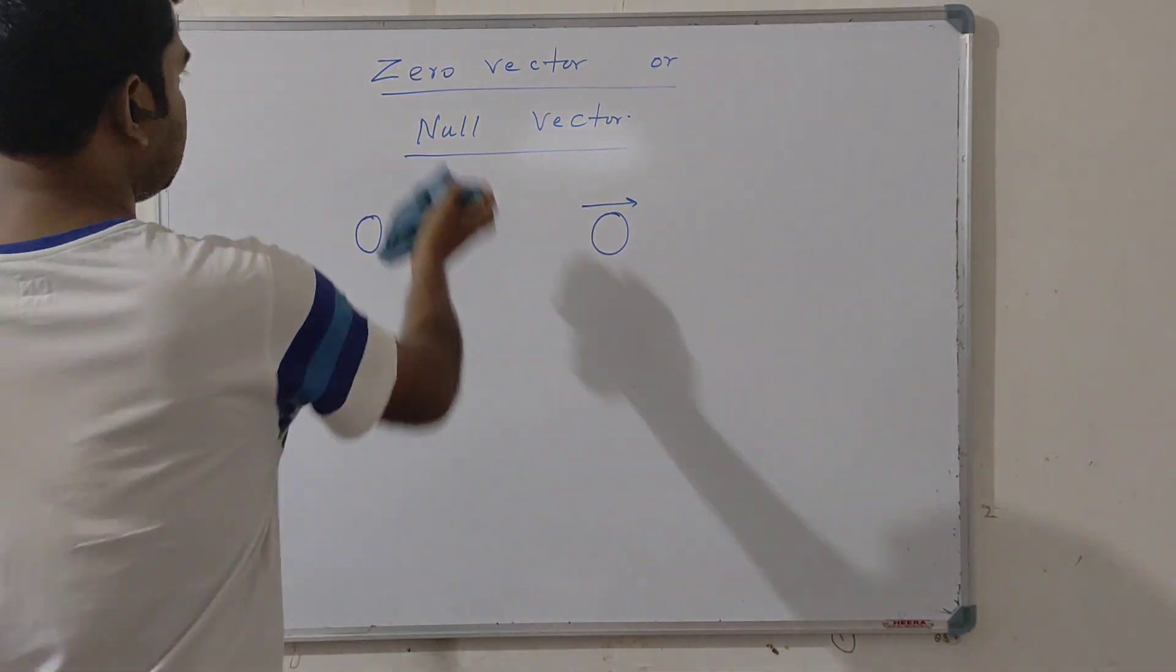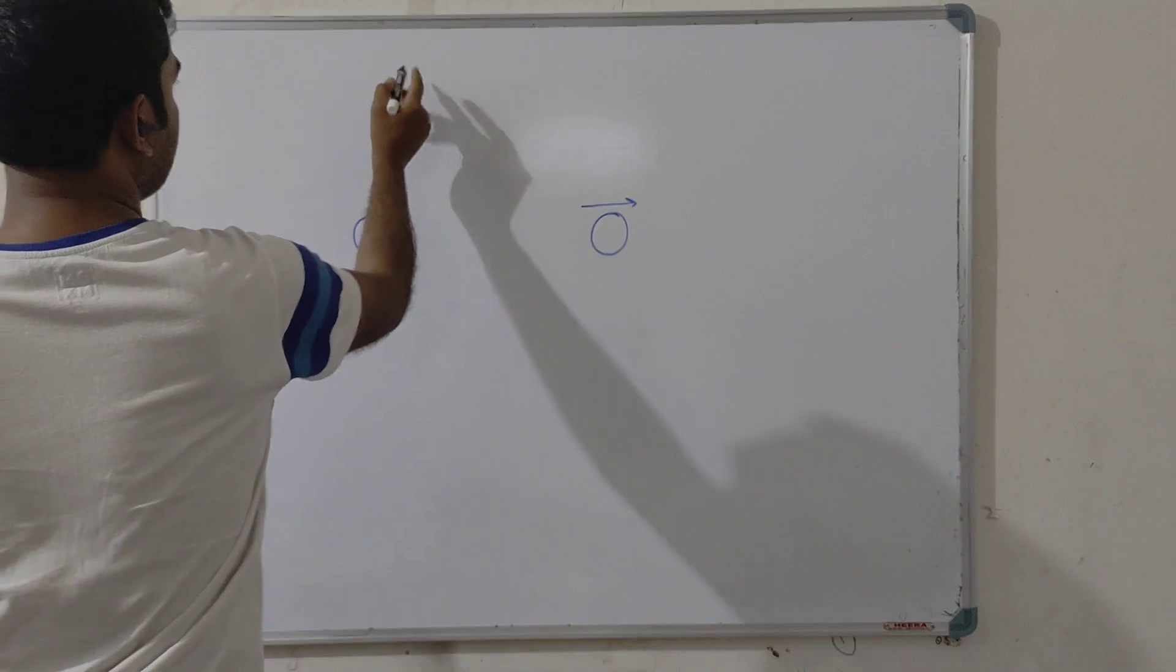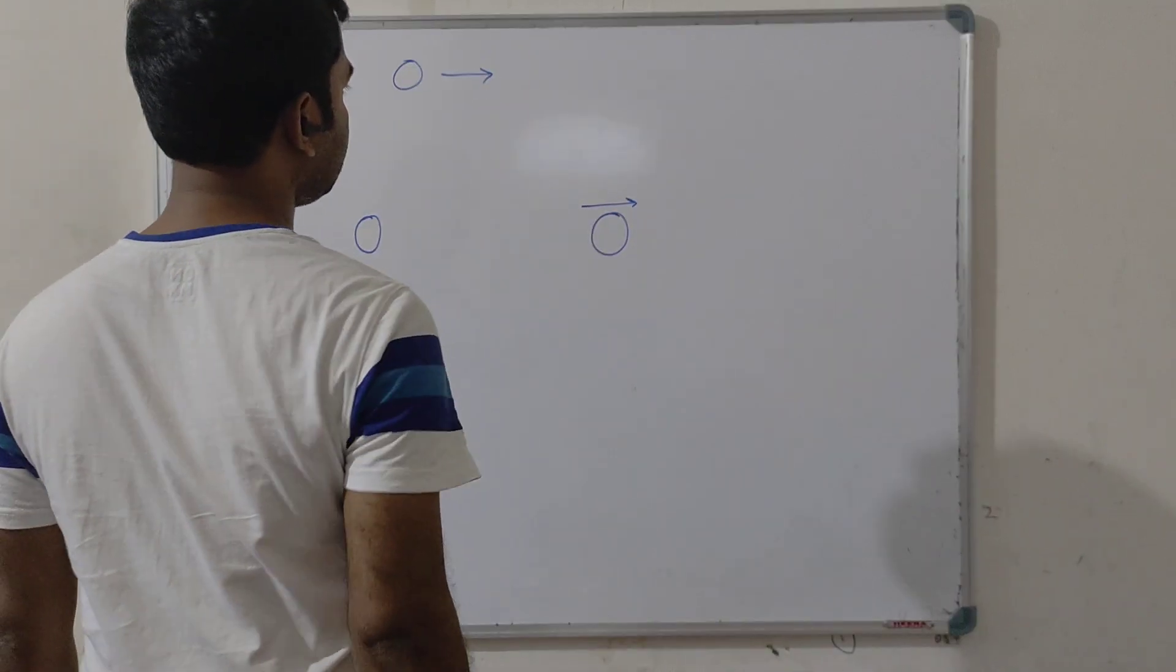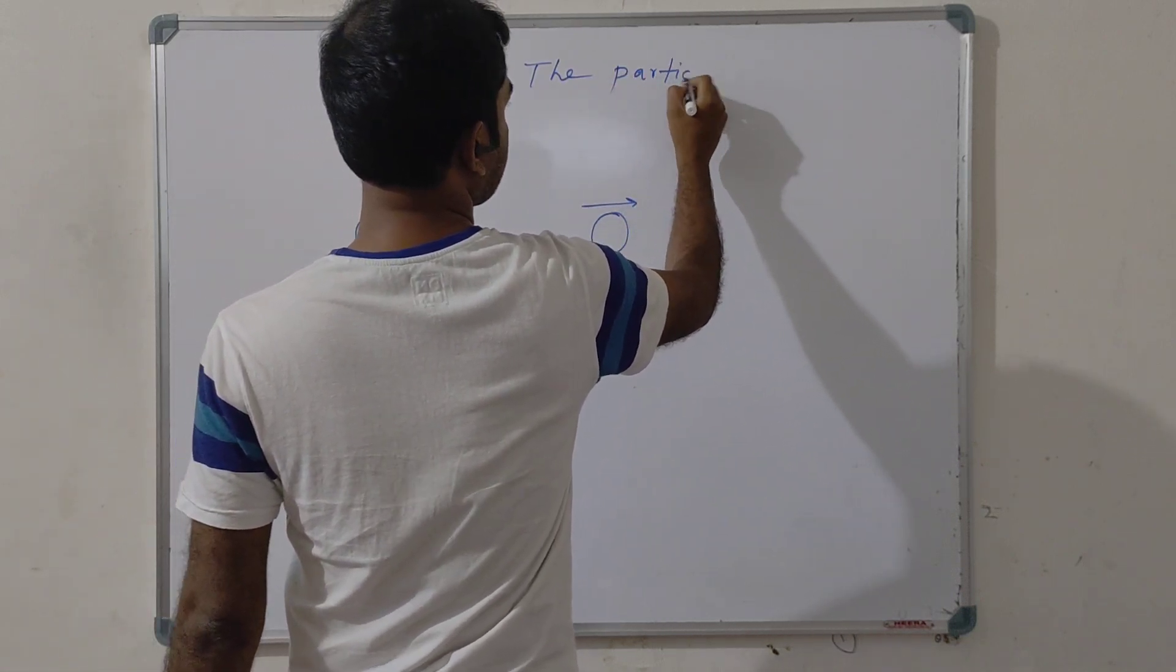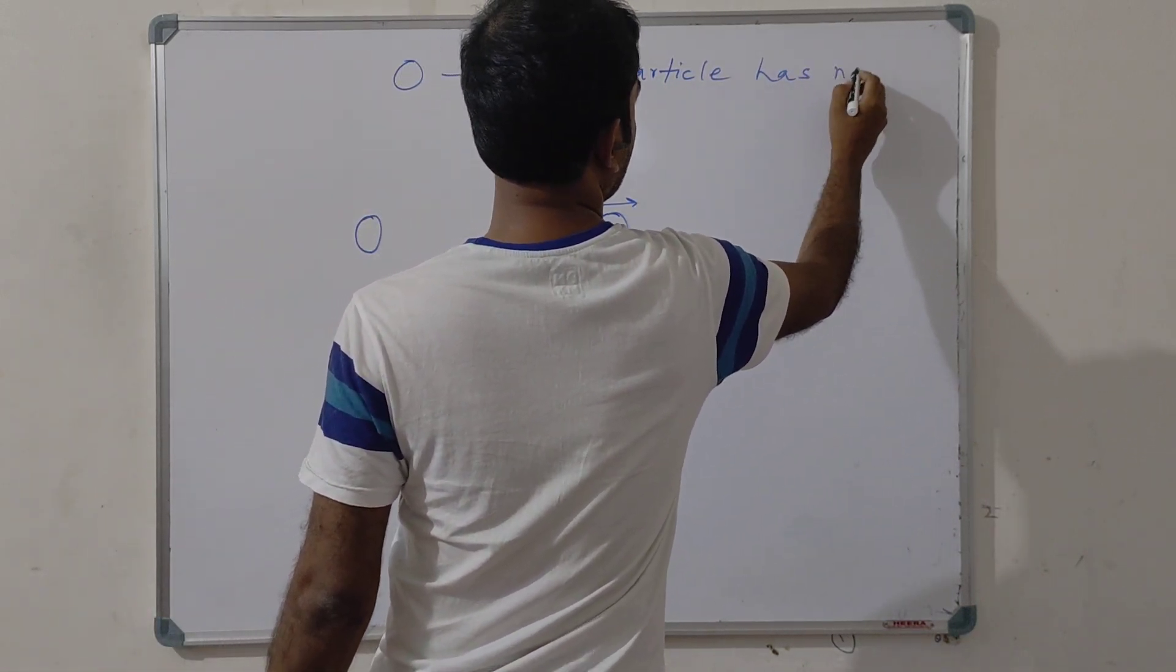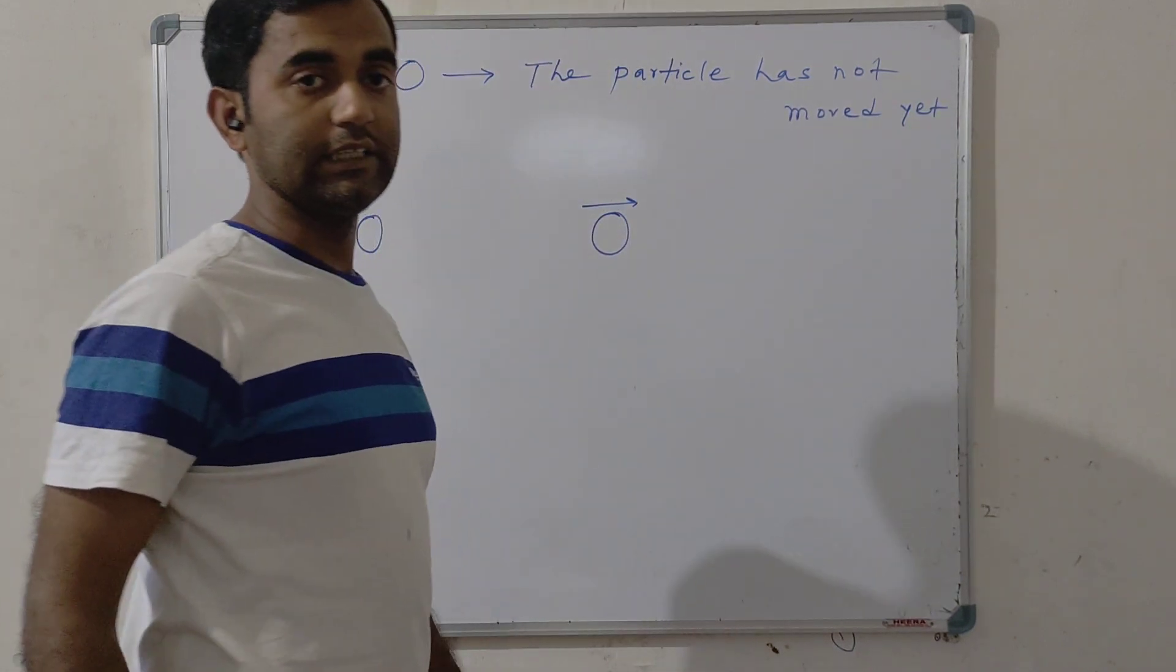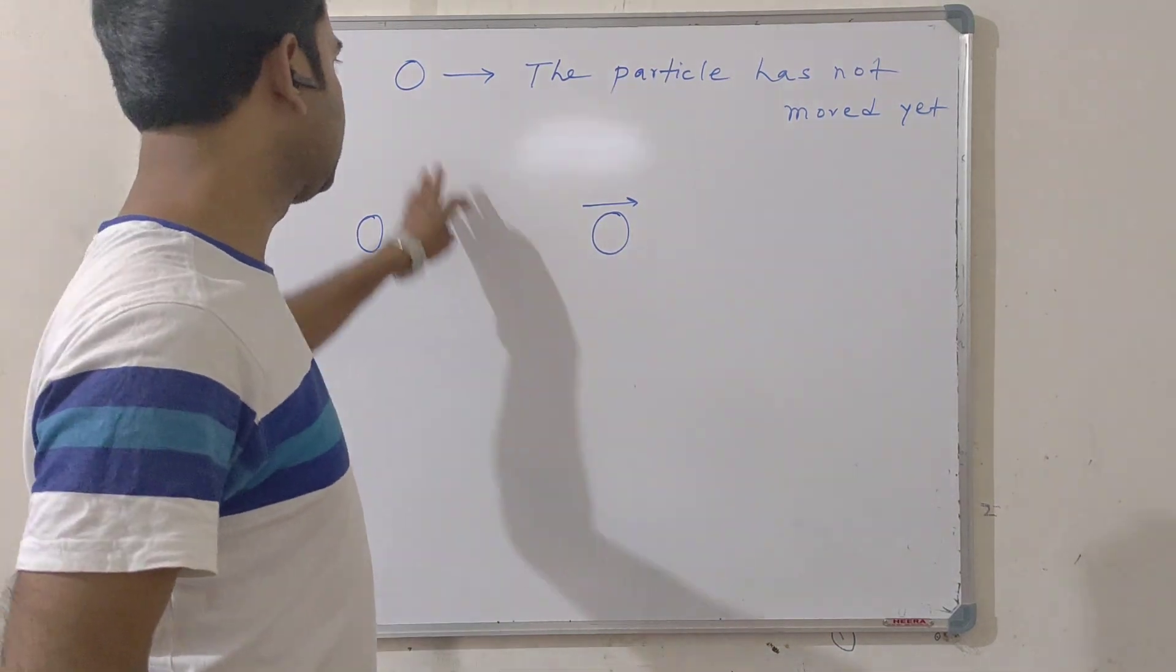Now consider the position of a particle is represented as zero. This zero means that the particle has not moved yet. It is the case of rest. The particle is in rest then its position will be represented as zero.